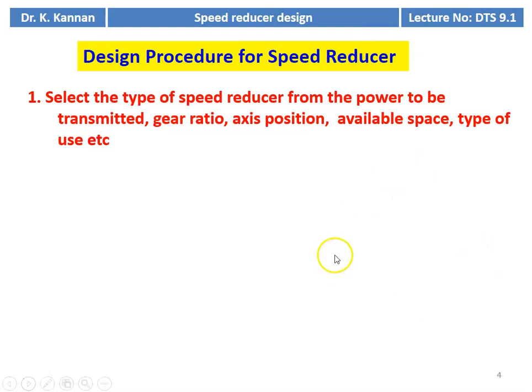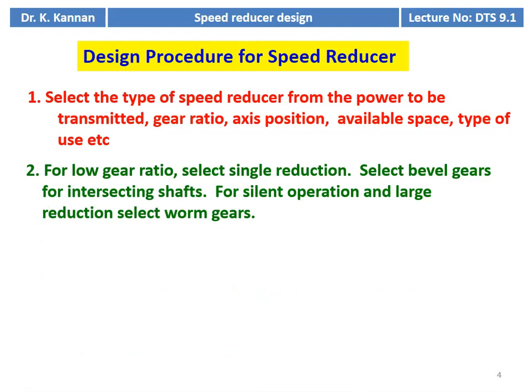Select the type of speed reducer based on the power to be transmitted — type depends on speed ratio, axis position, available space, and type of use. Based on these factors, we can select a spur gear, helical gear, herringbone gear, bevel gear, or worm gear speed reducer. For low gear ratio, select single reduction — one pinion and one gear. For higher speed ratio, go for two-stage speed reduction. Select bevel gears for intersecting shafts. For silent operation and large reduction, select the worm gear.